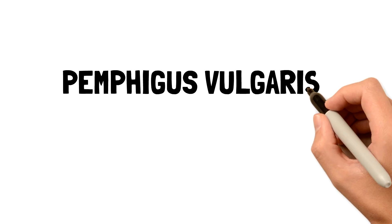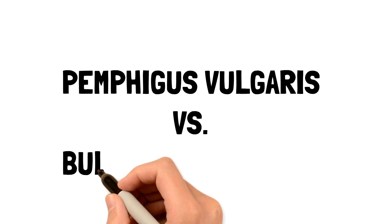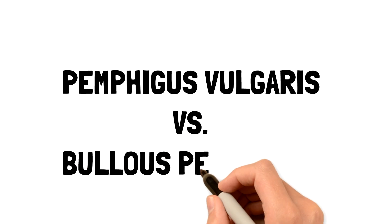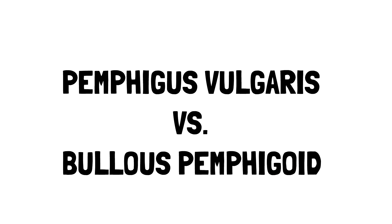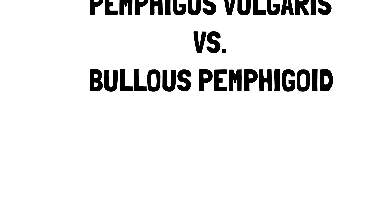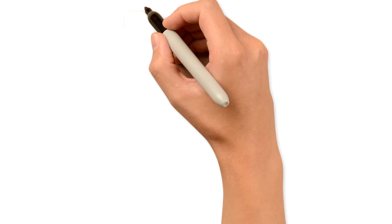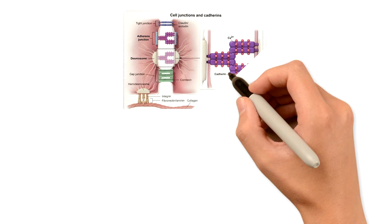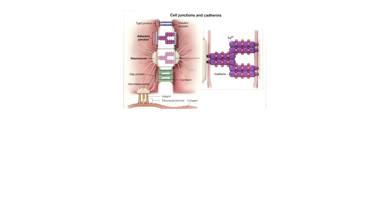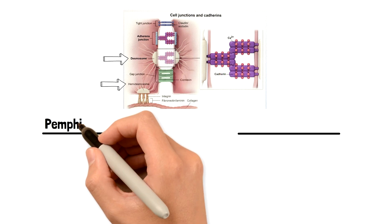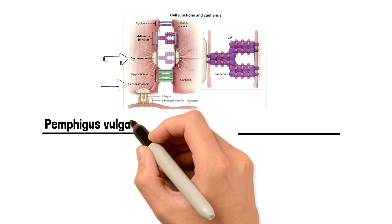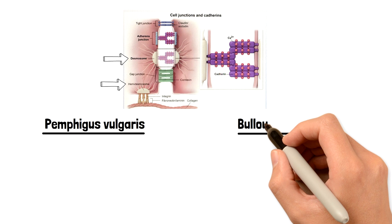Pemphigus Vulgaris versus Bullous Pemphigoid. These are both blistering skin conditions, but there are some key differences between them that we need to know. Throughout this video, keep this image in mind — it shows the cell junctions and their connections. Desmosomes and hemidesmosomes are respectively what are damaged in these disorders.